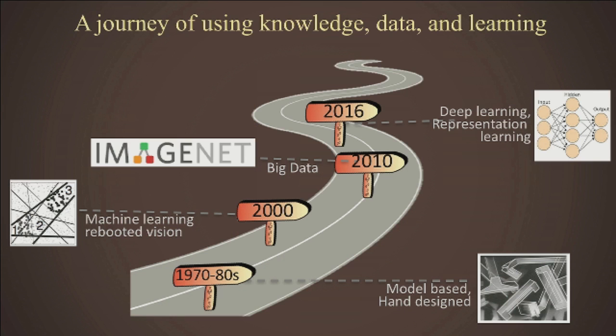We have taken a journey of more than 50 years together in the last 30 minutes — a brief introduction of how computer vision and artificial intelligence evolved through the incorporation of knowledge, data, and machine learning. Have we solved computer vision? I would like to remind everybody: we have not solved computer vision. The journey is still long. I want to use this last picture as an example to show where we are and where we should be going. What can today's computer vision tell us? It can tell us there are people, roughly tell us their gestures, give the rough layout of the scene — ceiling, floor, wall — and give a caption like 'a group of people in a room.'